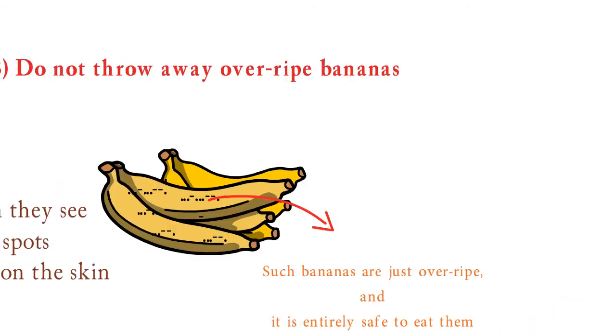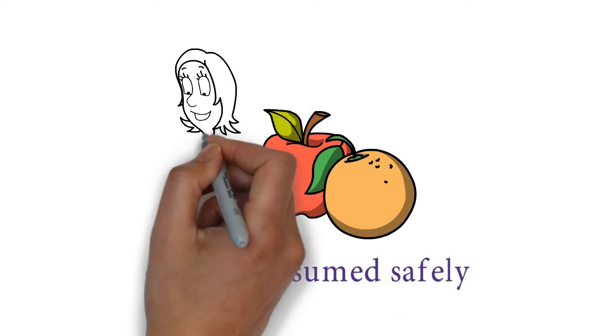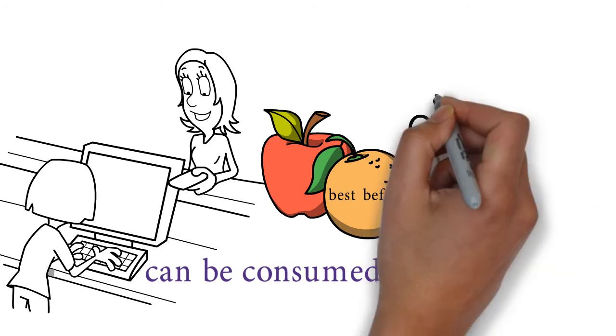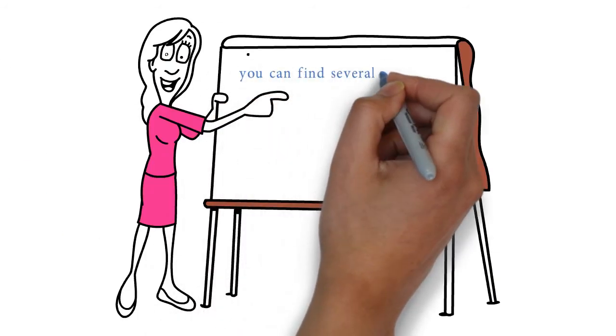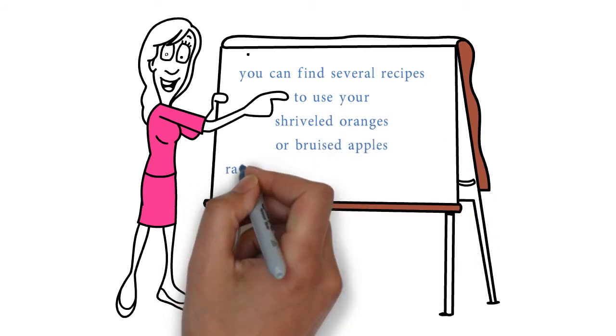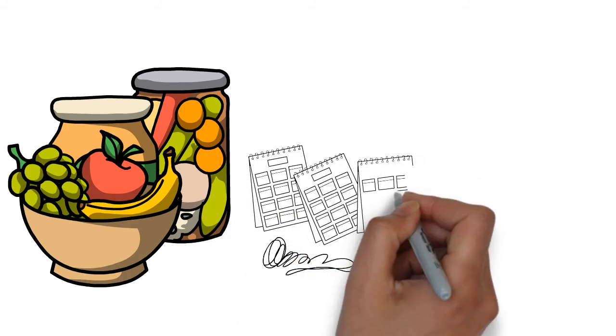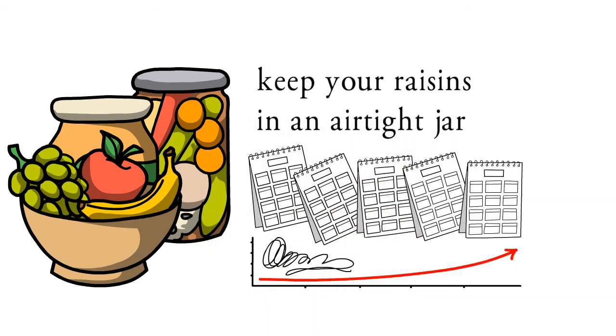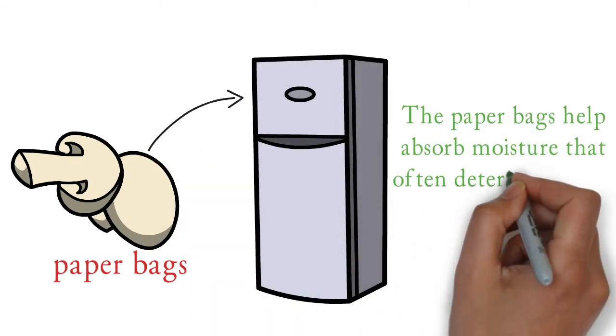Number 4: Apples and oranges are other fruits that can be consumed safely. Fruits sold in stores might also bear a best before date on them. Once again, use your judgment rather than sticking to the printed date. Moreover, you can find several recipes to use your shriveled oranges or bruised apples rather than throwing them away. By storing your food correctly, you can relish them for a much longer time. For instance, keep your raisins in an airtight jar, and they will last longer. Store your mushrooms in paper bags in the refrigerator. The paper bags help absorb moisture that often deteriorates the mushrooms.